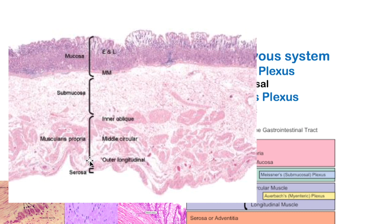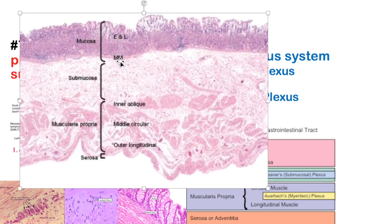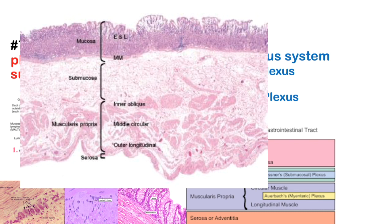Next is the muscularis propria, also called muscularis externa. Between the layers of muscle is Auerbach's plexus, or the myenteric nerve plexus. Meissner's plexus has more to do with secretions, regulating blood flow, and absorption. Auerbach's plexus innervates the muscle tissue to produce peristalsis — these are two distinct functions.